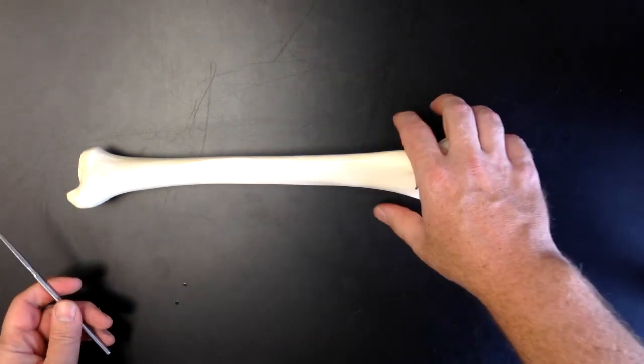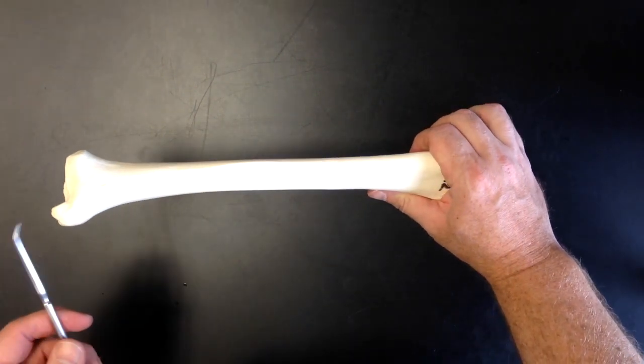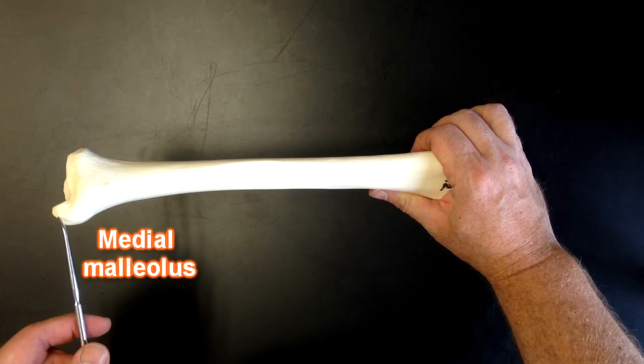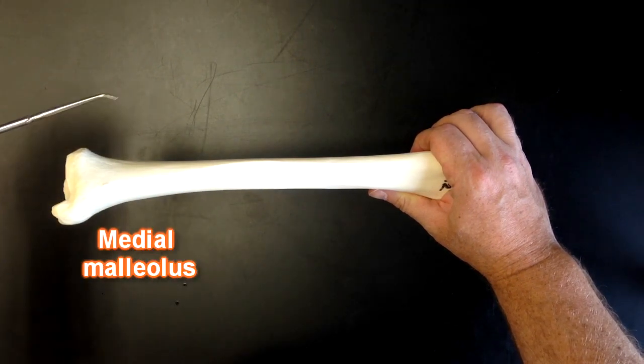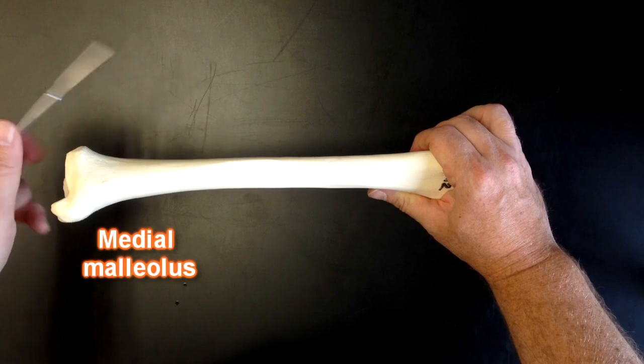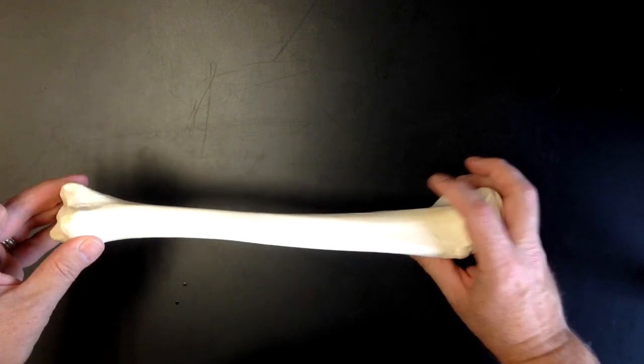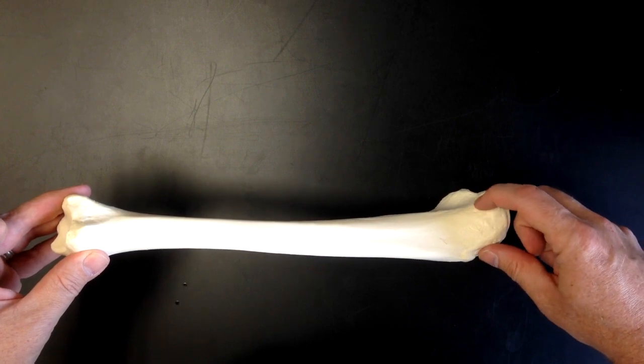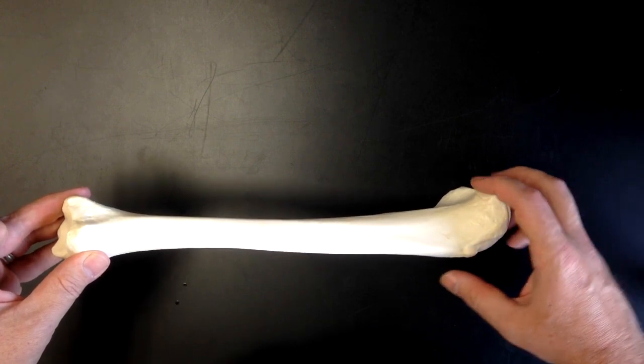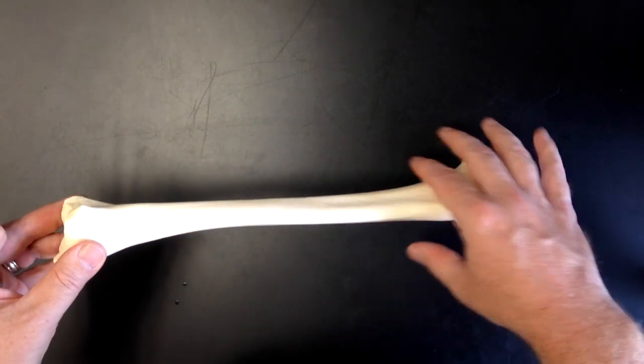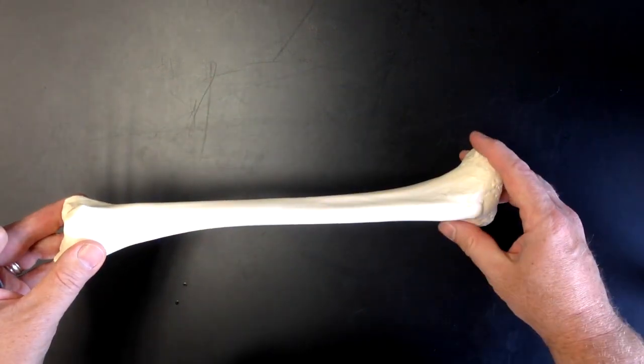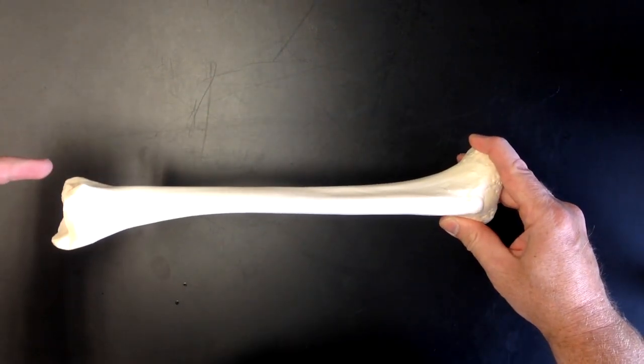Down here at the distal end, we can see our medial malleolus. Remember, the fibula would attach on this side, so there's an articular surface right here for the fibula, as well as up here. The lateral malleolus would actually be part of the fibula, and that would be over here someplace.